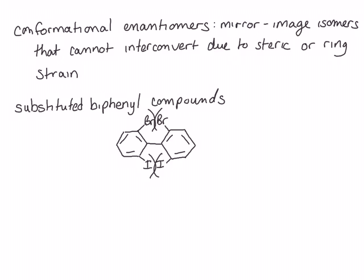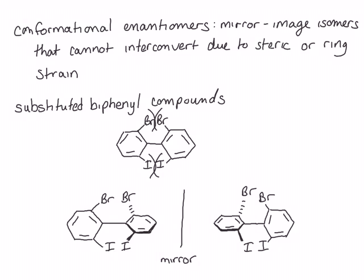Steric strain prevents this molecule from adopting a planar conformation. Instead, it must have the two phenyl rings at right angles to one another, where the left ring is in the plane of the screen and the right ring is perpendicular to it, with the bromine pointing away from us and the iodine pointing towards us. This molecule in this conformation has no internal mirror plane of symmetry. We can draw a mirror image and it is non-superimposable. Because neither molecule can rotate around the bond between the two rings due to steric strain, they cannot interconvert — these are conformational enantiomers.